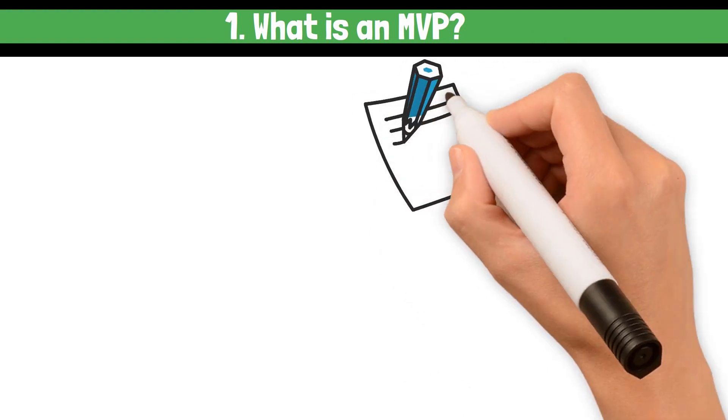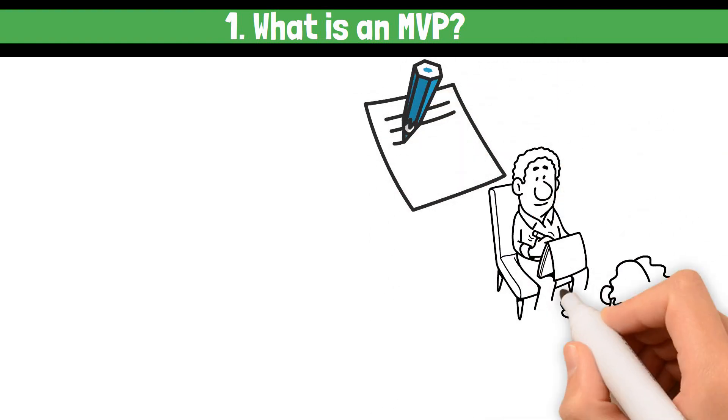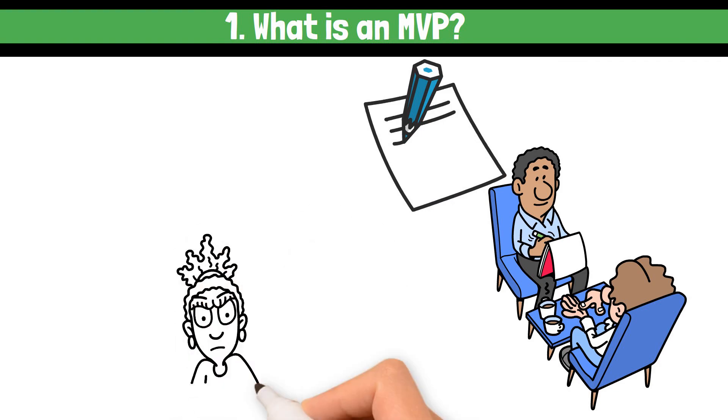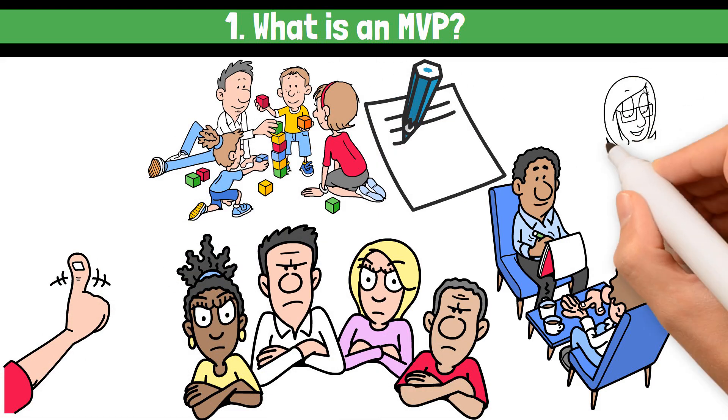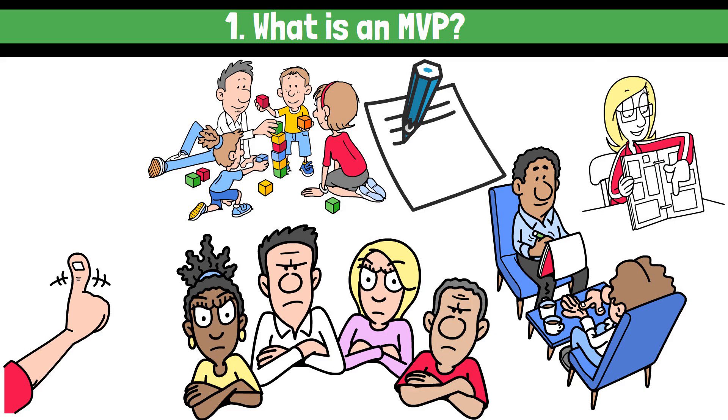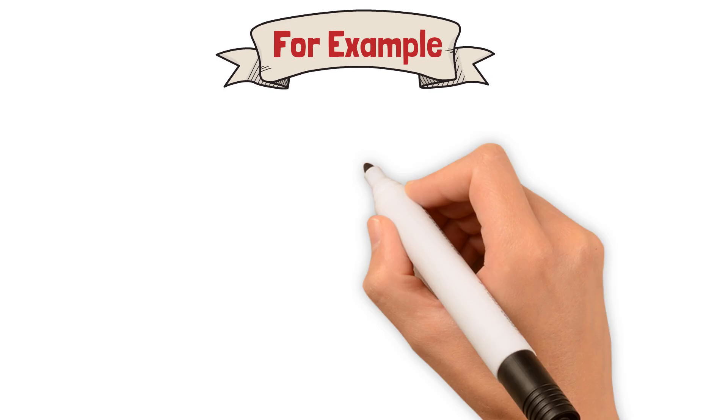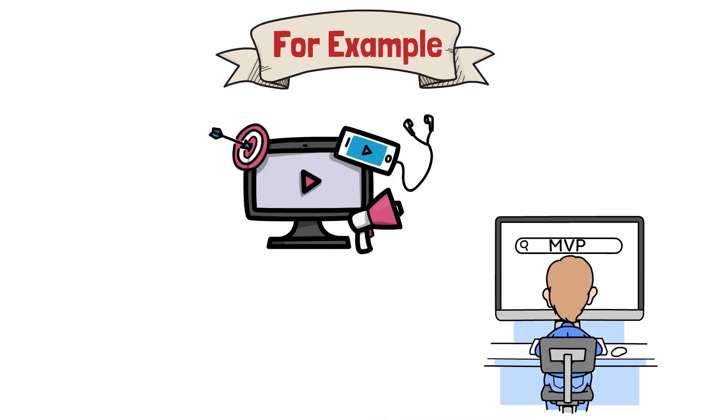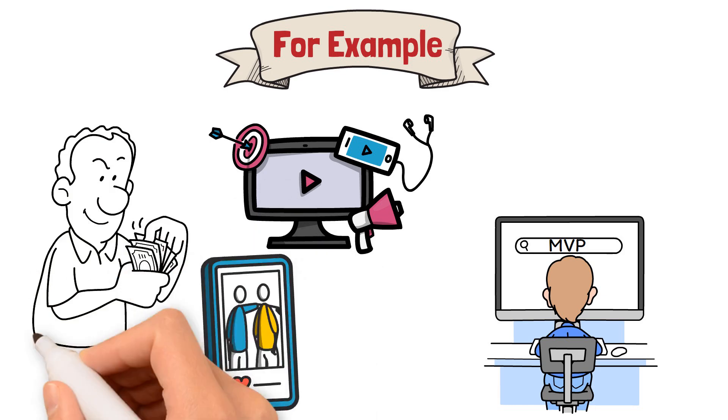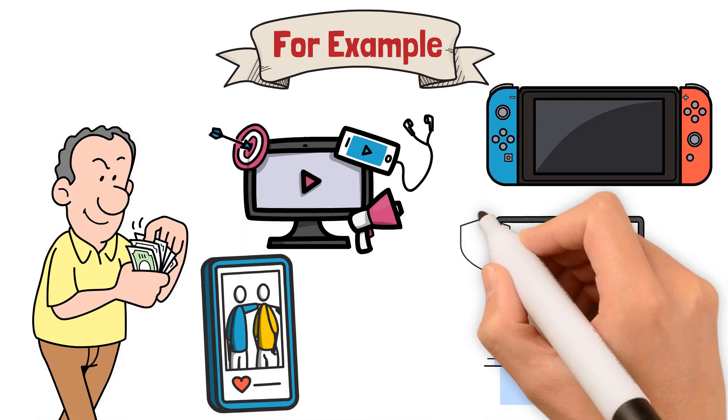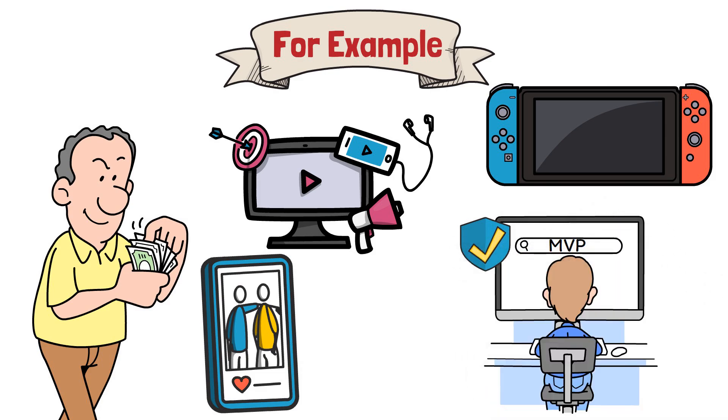An MVP is the simplest version of a product that provides value to users while allowing the team to test assumptions and gather feedback. It's not about building a half-baked product. It's about focusing on what's absolutely necessary to solve a user problem. For example, think about Instagram. Its MVP was a simple app for sharing photos with basic filters. Over time, it evolved into the feature-rich platform we know today. But the MVP focused on just one core value—photo sharing.